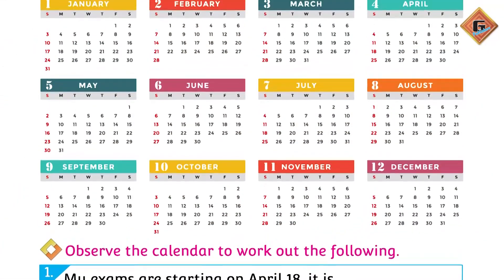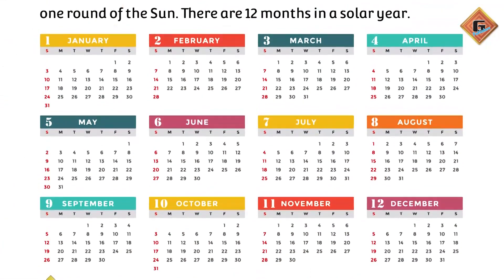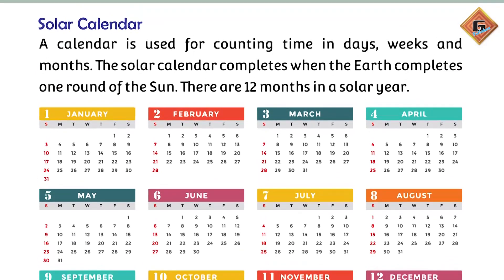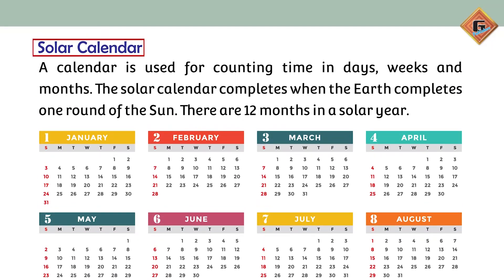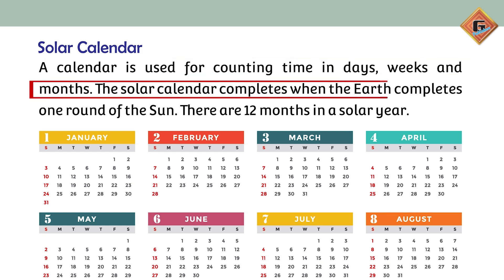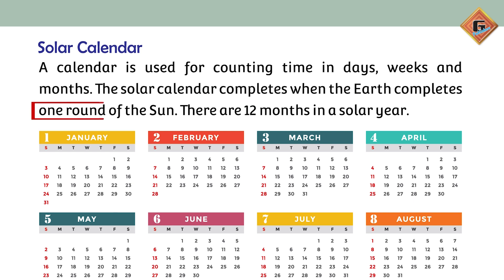Today's lecture is going to start from page 134 of Unit 5 of Gohar Mathematics for Class 2. On page 134, the title is 'Solar Calendar.' A calendar is used for counting time in days, weeks, and months. The solar calendar completes when the Earth completes one round of the Sun.